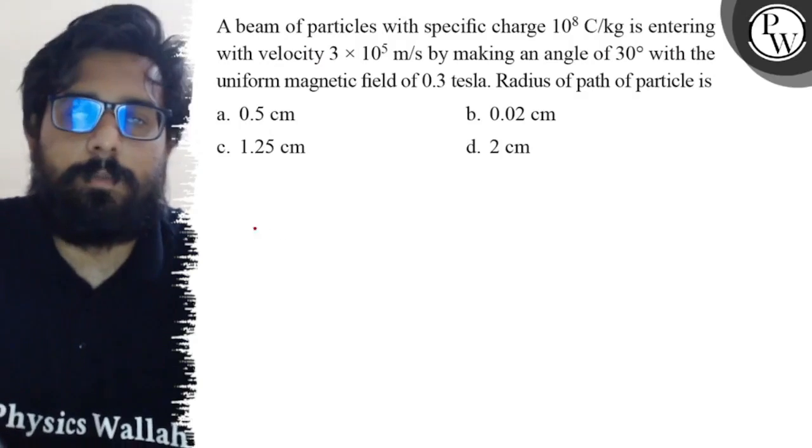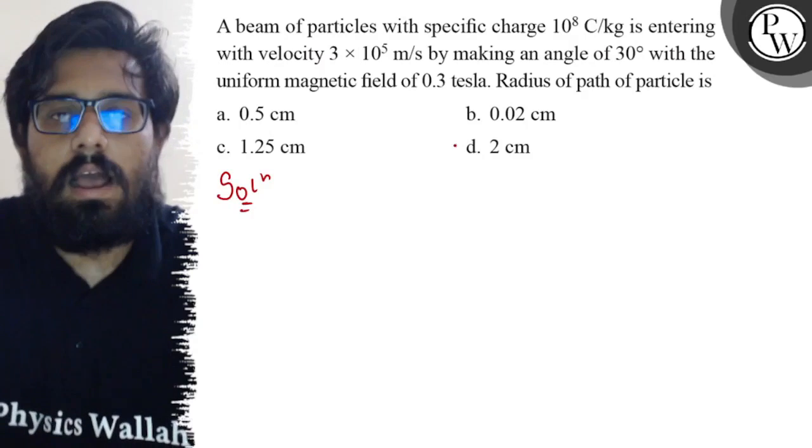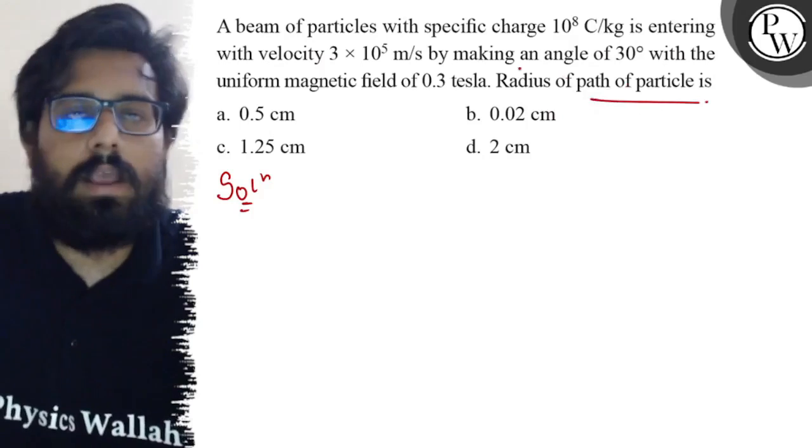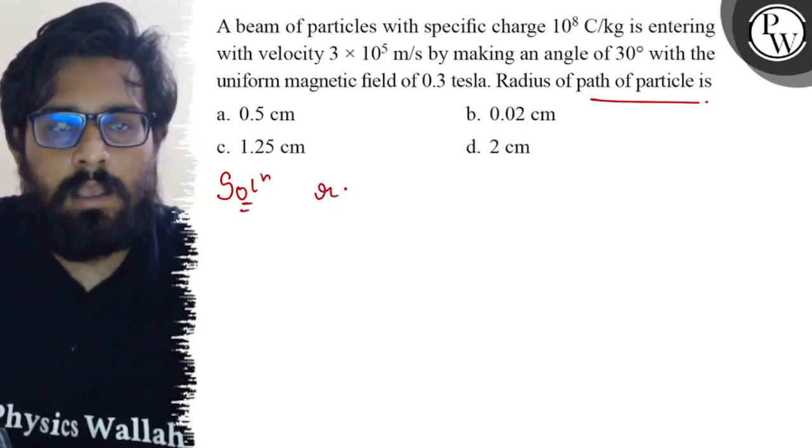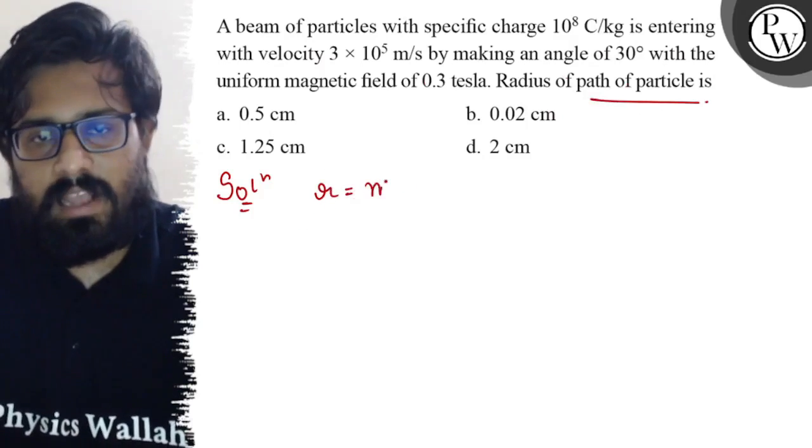So here in this question I have to find out the radius of the path. Again, the same formula we have to use. For r, we know it is nothing but mv by qB.